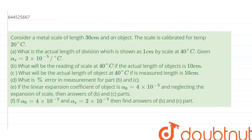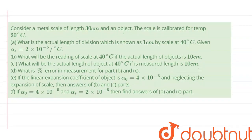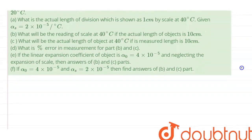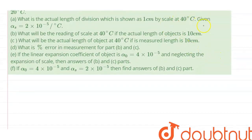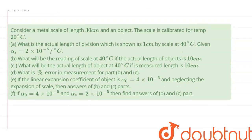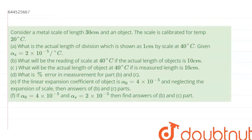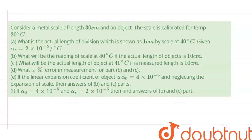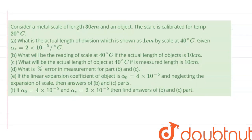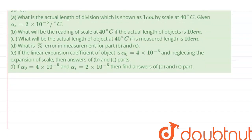In the first part, what the question is asking is that due to the expansion — because the scale was calibrated at 20 degrees Celsius and now we are measuring at 40 degrees Celsius — due to the expansion the length of the scale has changed, and the new length is 1 cm. Which means L plus delta L is equal to 1 cm.